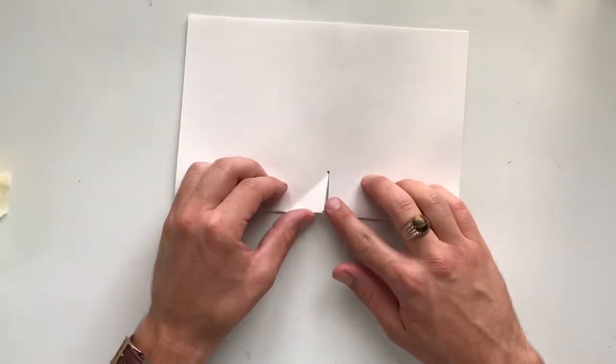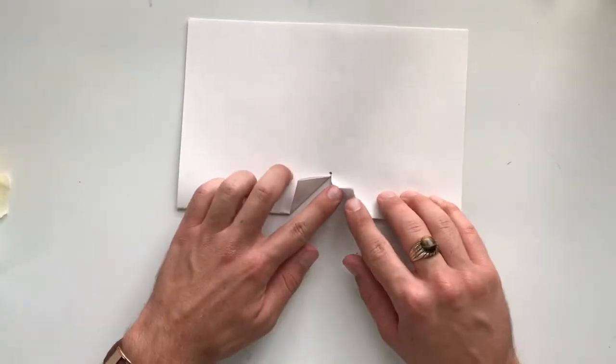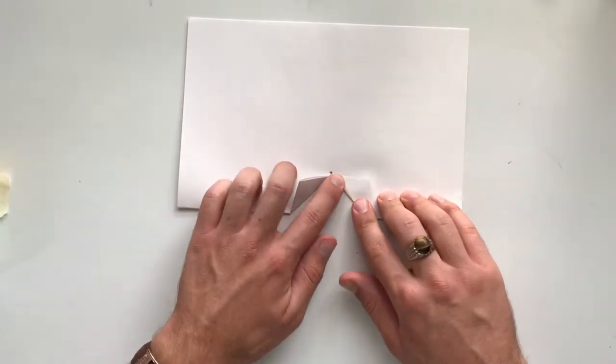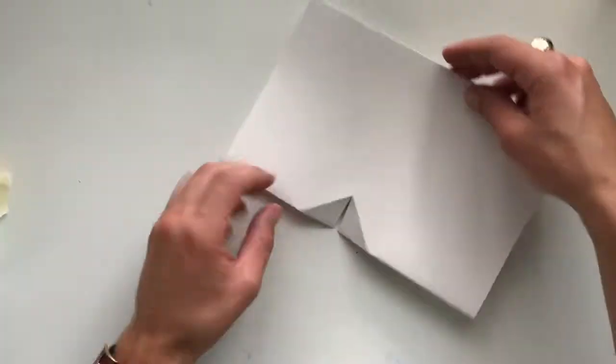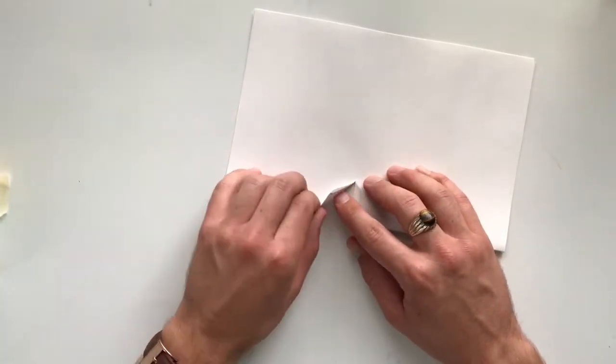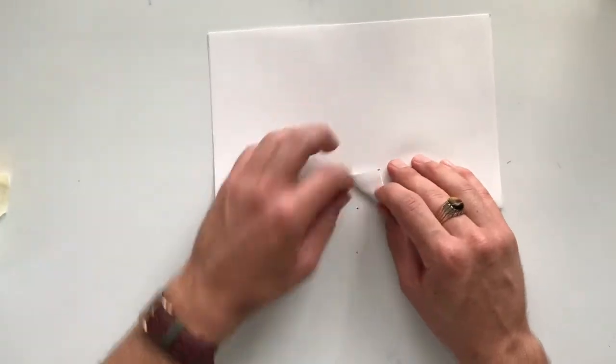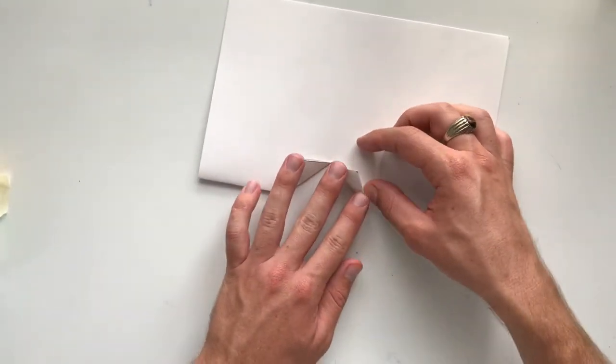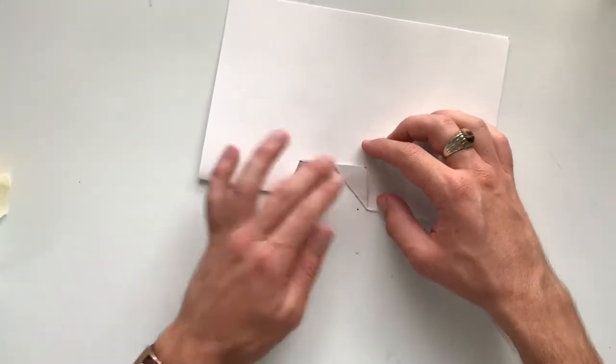Now you're going to want to work the paper and fold each edge outwards. We're going to flip it over and do this again, the opposite direction. Take your time. This part can be a little tricky. We're just going to fold it outwards.